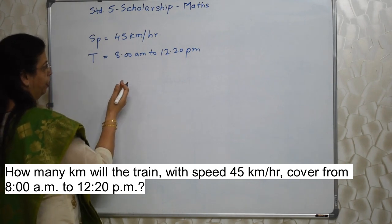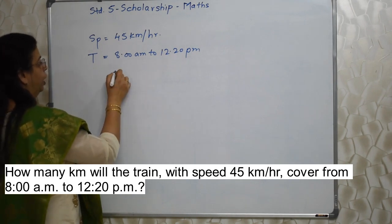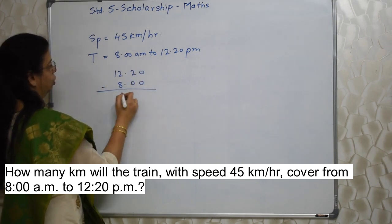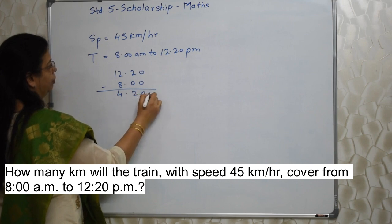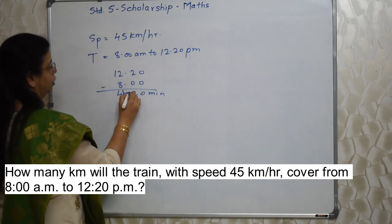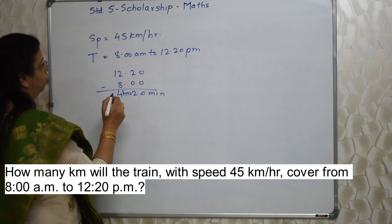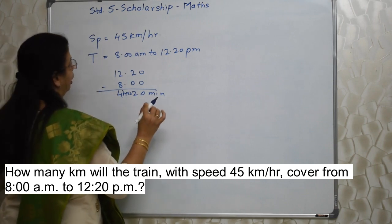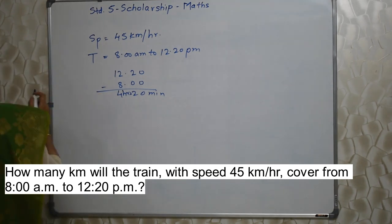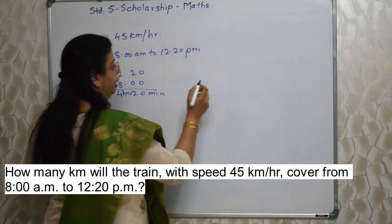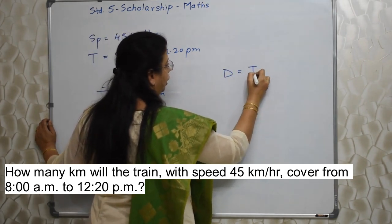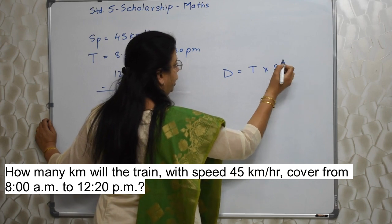You can do it with the help of fingers, or you can do it like this: 12:20 minus 8:00 — so it is 4 hours 20 minutes. So here the simple formula we need to use — we need to find out the distance. What is the formula? Distance is equal to time into speed, or speed into time.